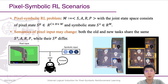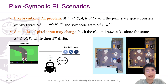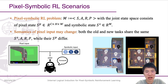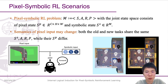We formalize the problem with the pixel and symbolic joint state space, as shown in the left picture. Additionally, there are some scenarios where the semantics of the pixel state change between the old and new tasks, like the right picture about rooms with different lighting conditions.